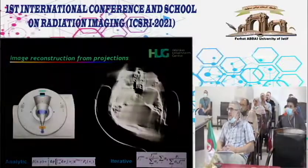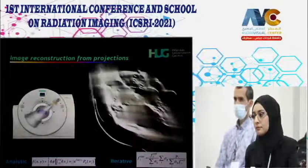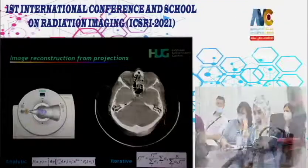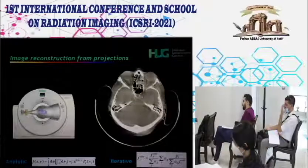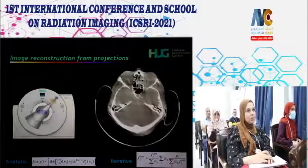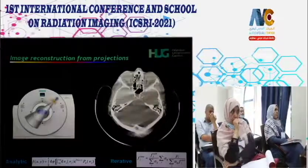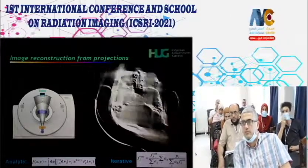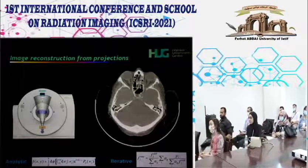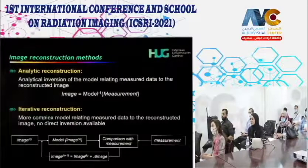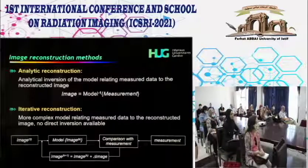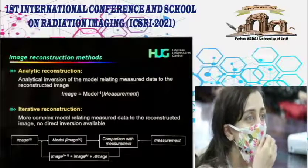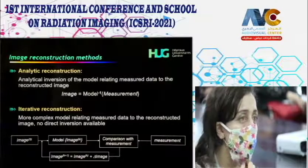Image reconstruction from projections inverts the acquisition process. Filtered back projection filters the acquired projections in Fourier space and then back-projects them line by line to display the image. The analytic approach is the exact inversion of the Radon transform or x-ray transform depending on the acquisition model, inverting the measured projections to get images.